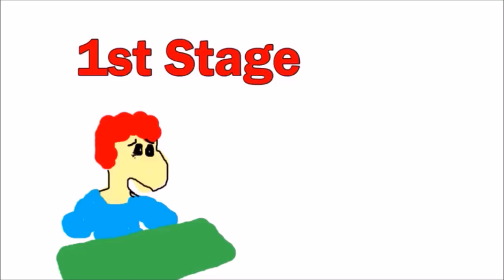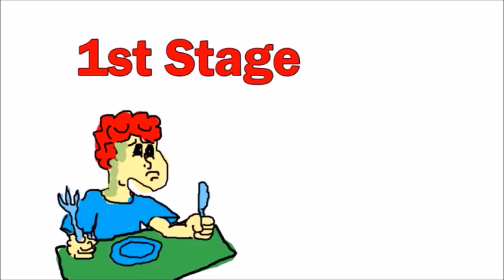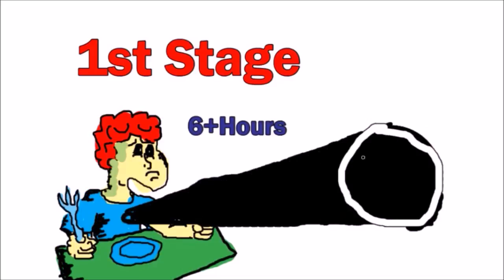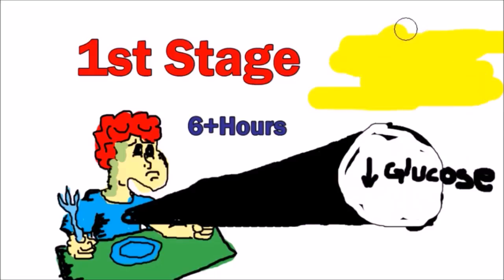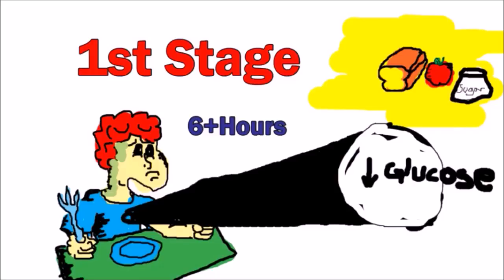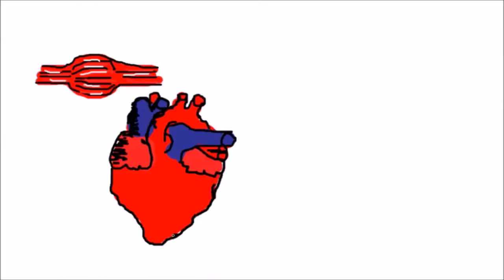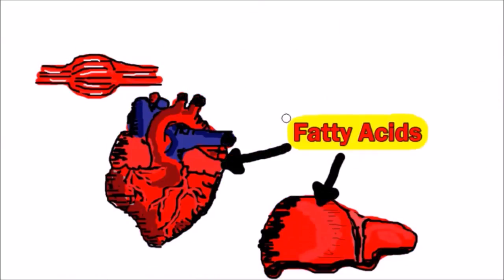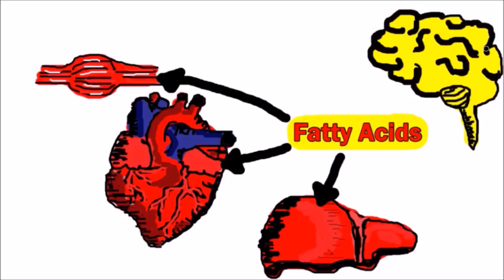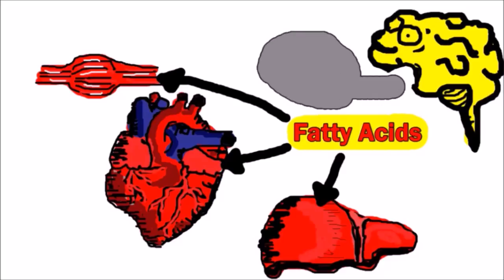The first stage consists of when the body is without food for six plus hours and it starts running out of glucose from our food source such as carbs and other sugars. At this point, our muscles, heart, liver, and other vital organs will rely on fatty acids for energy. But the brain still needs glucose for energy.